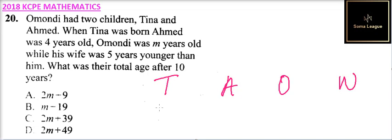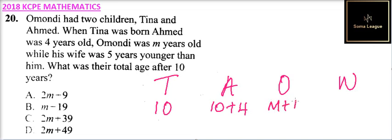So it means after ten years, Tina was ten years. Then Ahmed, who was four years older when Tina was born, will be ten plus four. So Omode was M years, so it will be M plus ten. And the wife was M minus five — that is five years younger than Omode — and you add the ten years.